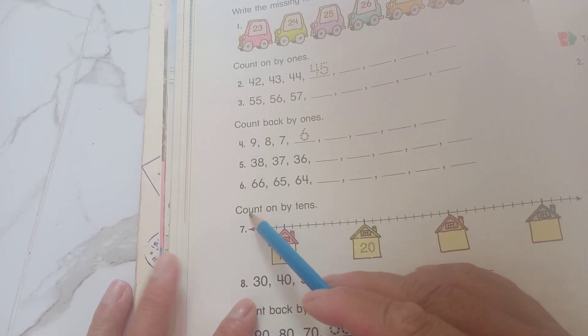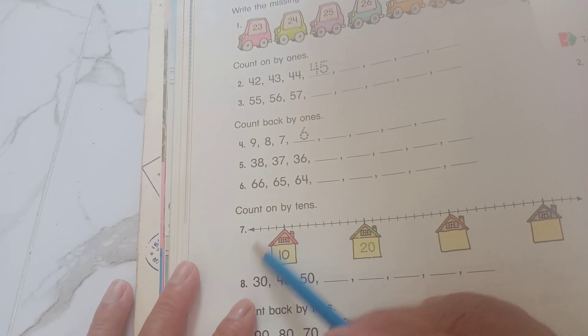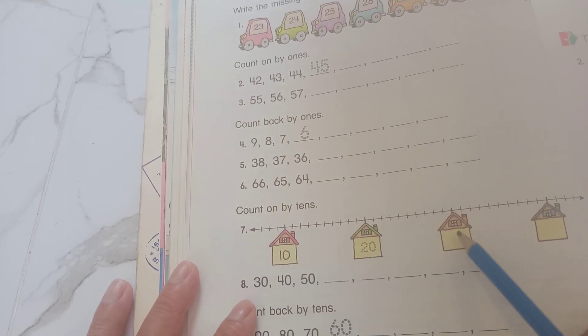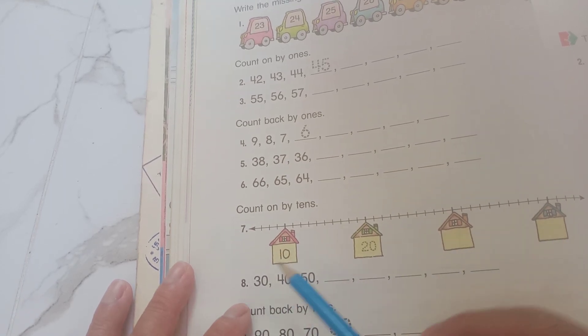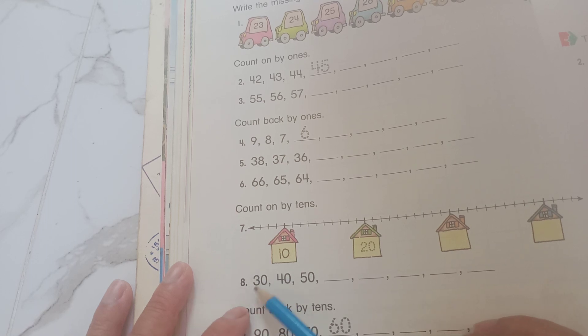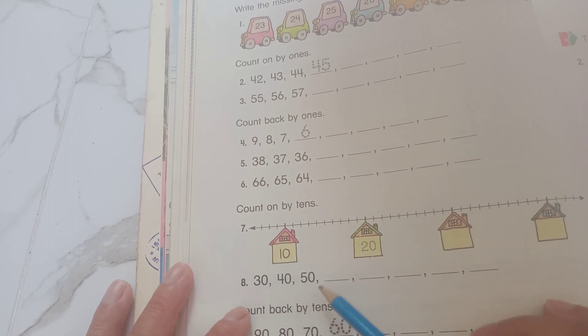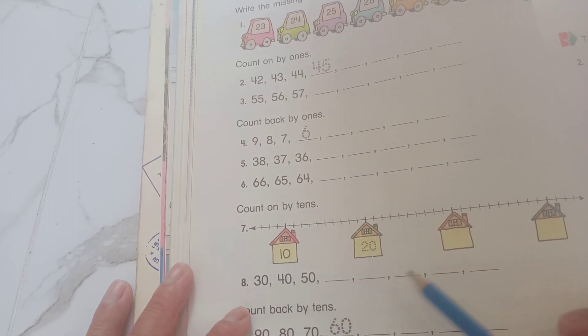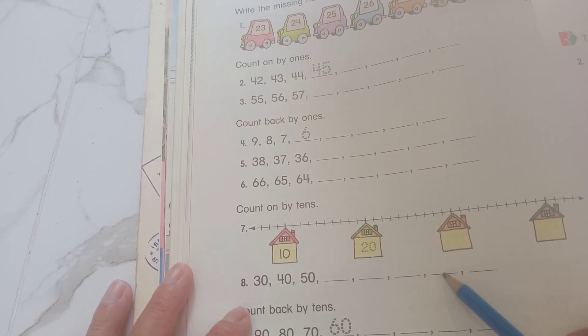And so now count one by 10. Exercise 7: 10, 20, 30, 40. And number 8: 30, 40, 50, 60, 70, 80, 90, 100.